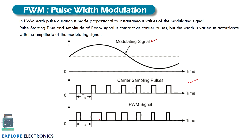You can observe that the width is changing — this width is different, this width is different, this width is different. Depending on the amplitude of the modulating signal: when amplitude is maximum, the width is maximum; when amplitude is minimum, the width is minimum. Each pulse duration is made proportional to the instantaneous value of the modulating signal. The pulse starting time is the same as the carrier pulse — each pulse starts at the same time as the carrier transitions from zero to one, but the width varies according to the modulating signal amplitude.